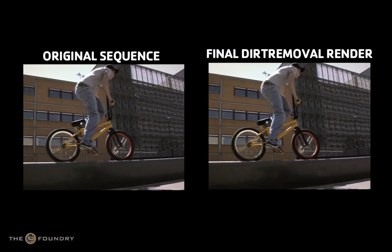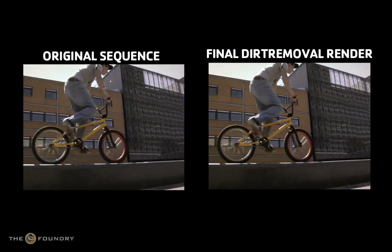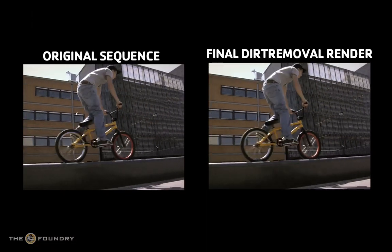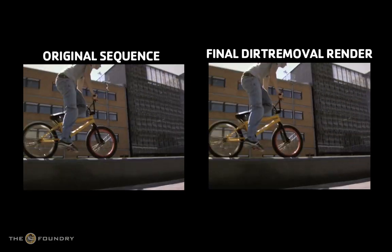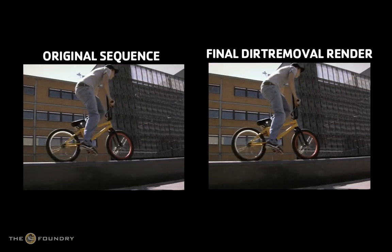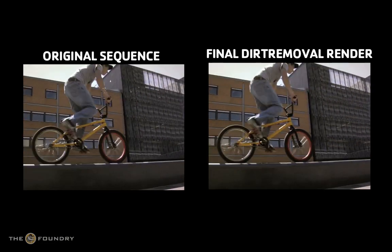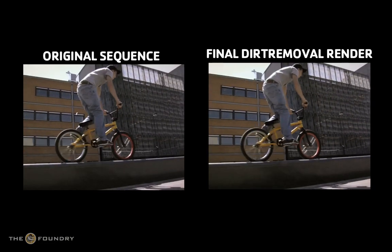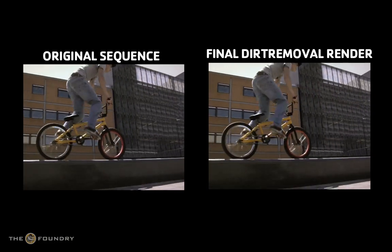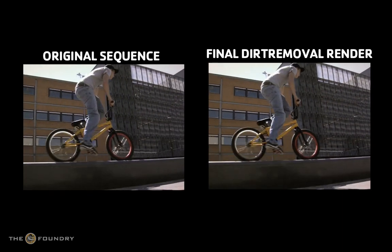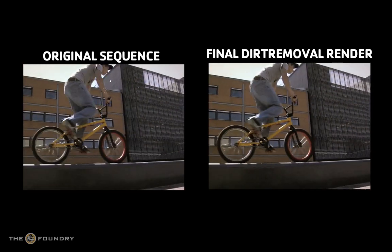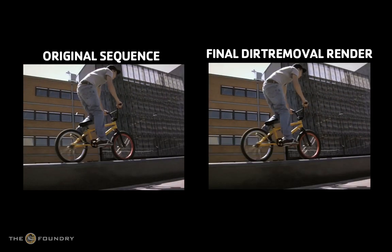A vertical scratch in a sequence will not be classified as dirt as it appears in the same place for every frame. Similarly, dirt in the camera lens or in the telecine gate will not be classified as dirt, as it appears in the same place on each frame.